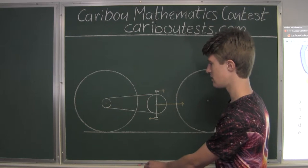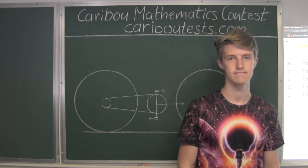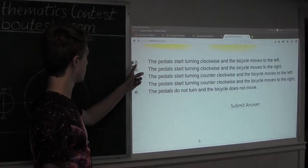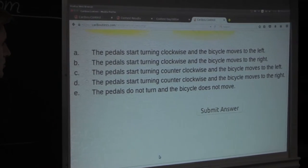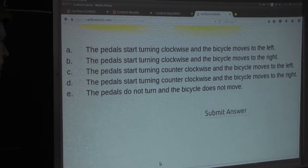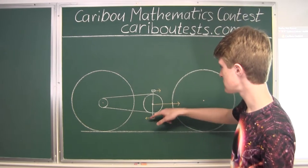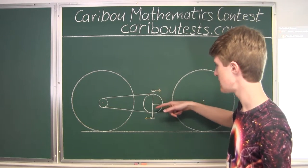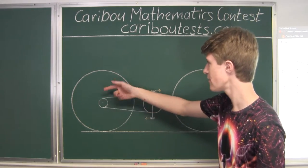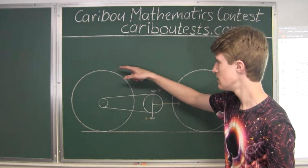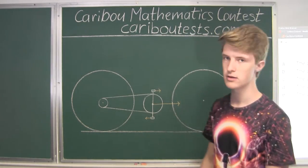Now let's look at the options. Option A: the pedals start turning clockwise and the bicycle moves to the left. Let's see what happens when the pedals start turning clockwise — the front gear wheel and the back gear wheel must also turn clockwise, and therefore the back tire would also move clockwise. After the back tire moves clockwise, the bicycle would move to the right. But option A says it moves to the left, so option A is plainly wrong.